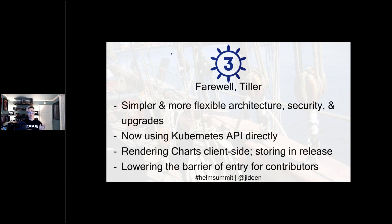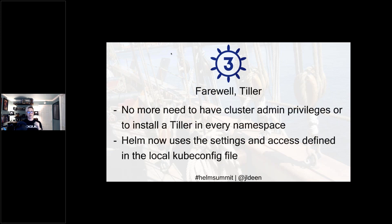Helm now communicates with the Kubernetes API directly. It renders charts client-side and stores release information as secrets. Because we've removed Tiller as the middleman, it lowers the barrier for community contributions. The primary changes: no more need for cluster admin privileges, no need to define that or assign it to which version of Tiller, no need to install Tiller into every namespace. Helm uses the settings and access you define in your local Kubernetes config — that's it.